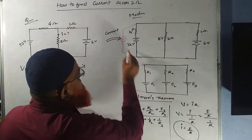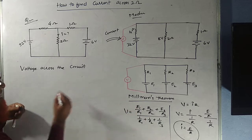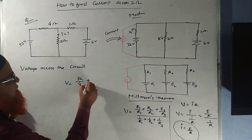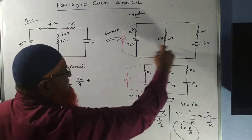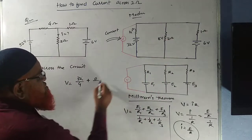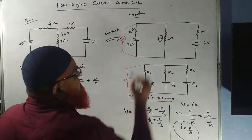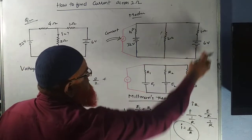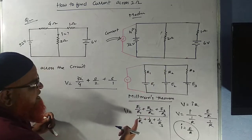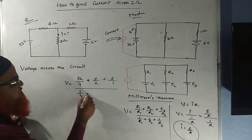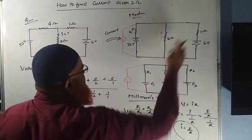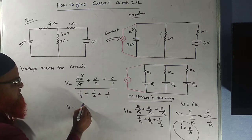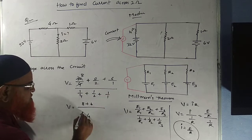For finding this voltage you need to apply Millman's theorem. E1/R1: what is E1? That is going to be 32/4. Here there is no cell, so there is no EMF — you write it as 0/2. Only 2 ohms is given, so 0/2. And here E3 is 6/1. This is all divided by 1/R1 + 1/R2 + 1/R3, which is 1/4 + 1/2 + 1/1. After solving: V equals 8 plus 0 plus 6 in the numerator.